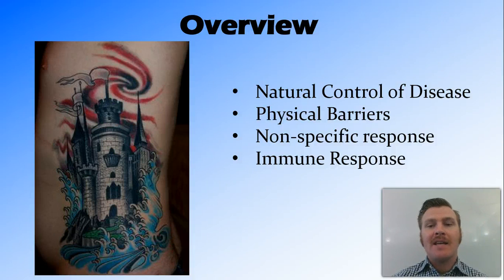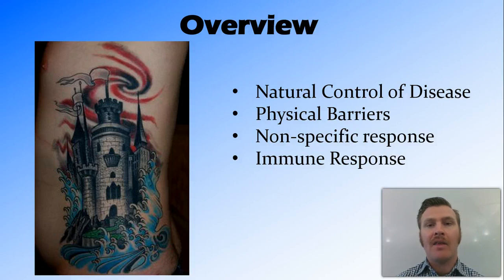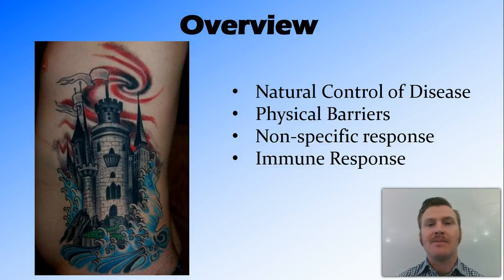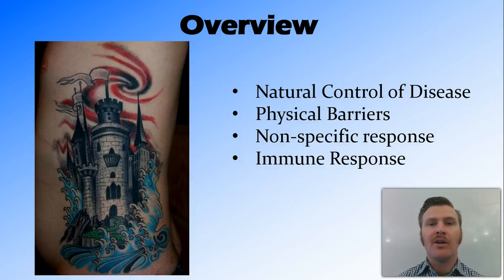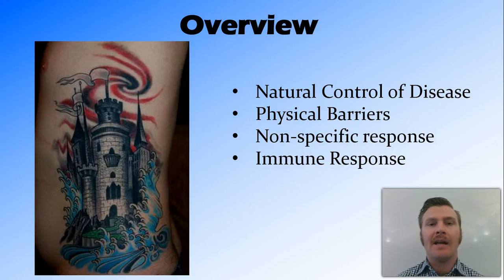In this video, we've looked at the natural control of disease using the castle analogy. The physical barriers — walls and moat in the castle, skin, mucous membranes, and cilia in the body — form the first line. The non-specific response — archers and soldiers in the castle, inflammation response and phagocytosis by leukocytes in the body — is the second line. The specific immune response — spies and assassins in the castle — involves T helper and T killer cells that recognize and kill specific antigens, forming the third line of defense.